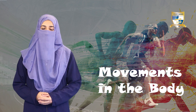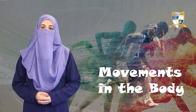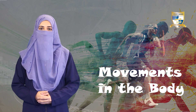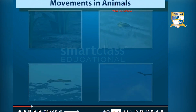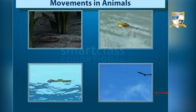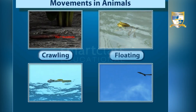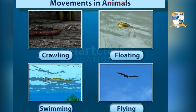Different organisms perform different types of motion — some crawl, some slither, some run, some swim, and some fly. Animals show various movements such as crawling, floating, swimming, and flying. Let's discuss each movement in detail.